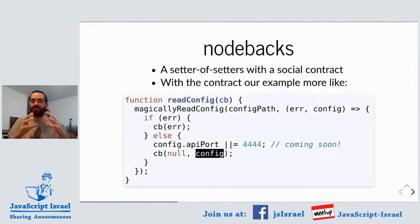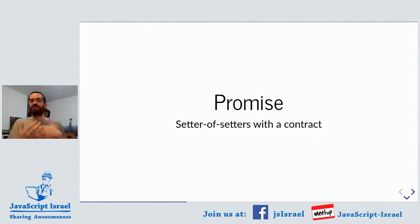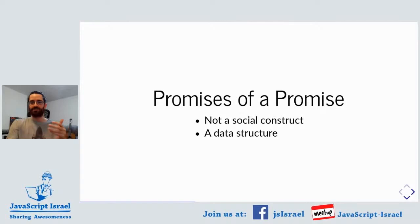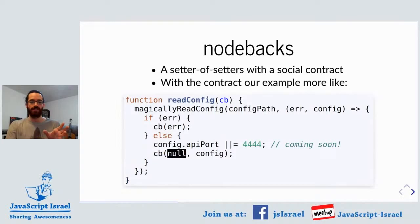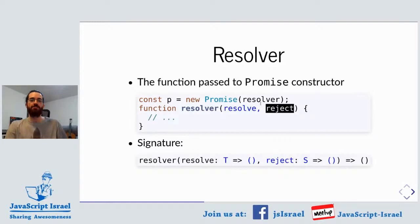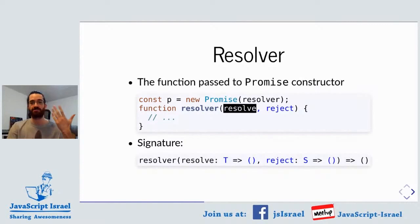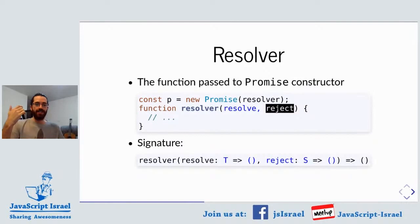So we have two expectations: the callback is called exactly once — no more, no less — and the first argument is the error, the second is the value. A lot of smart people came together and said, 'hey, this is a thing we can have an abstraction over.' That's a promise. A promise is a setter of setters with some contracts — it's not really a social construct, it's a data structure. The function you pass into a promise is known as a resolver function, and that in turn receives two other functions: if you have a value you call resolve and the promise is fulfilled; if you have an error you call reject and the promise is rejected.